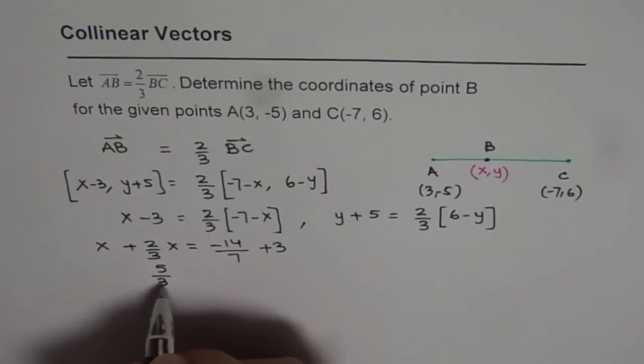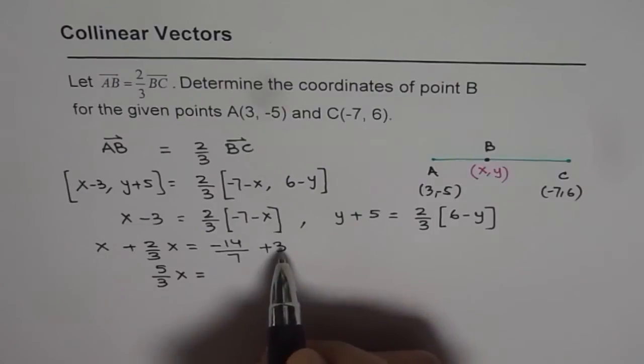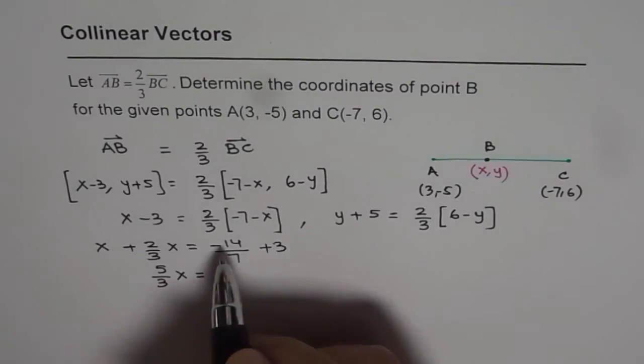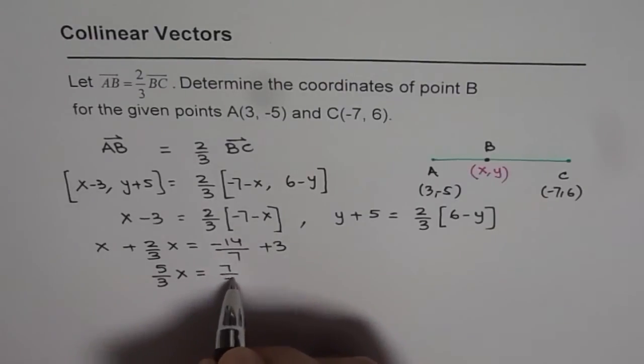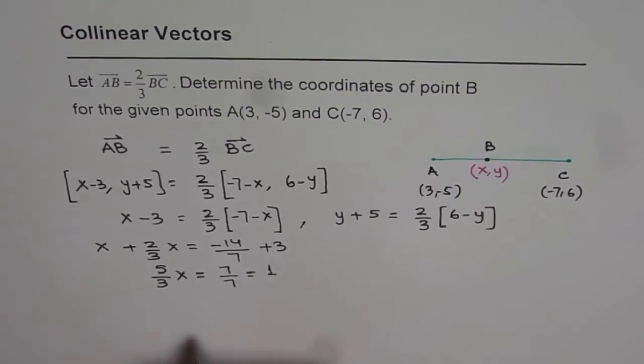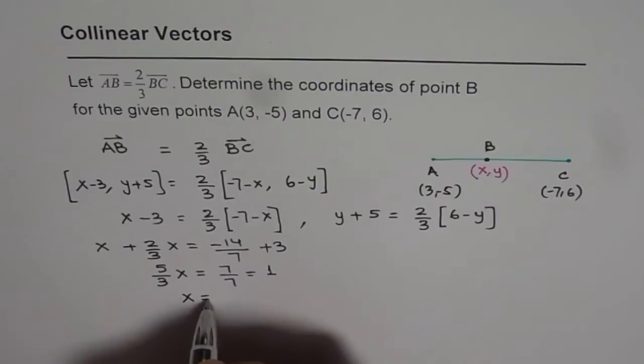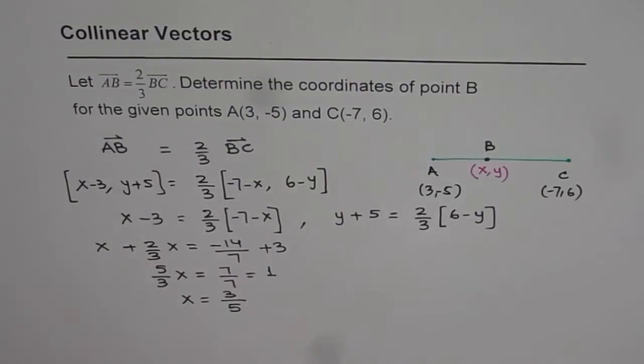5 over 3 of X is equal to 7 times 3 is 21. 21 minus 14 is 7. So we get 7 over 3, which is indeed 1. So we get X equals 3 over 5. That is the value of X.